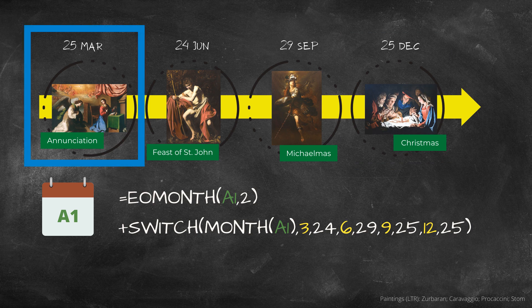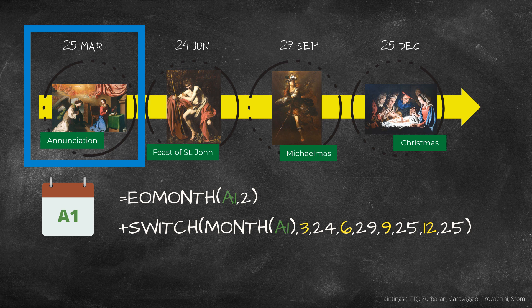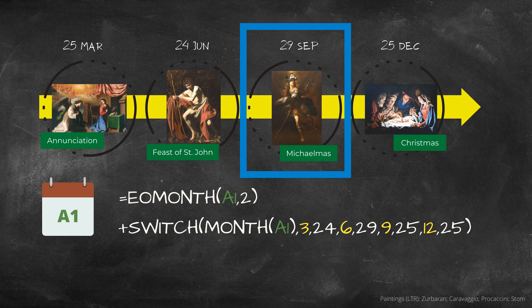The Annunciation on the 25th of March, that's not surprisingly nine months before Christmas Day, the Feast of St John on the 24th of June, and Michaelmas on the 29th of September.